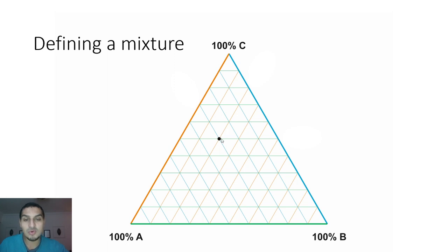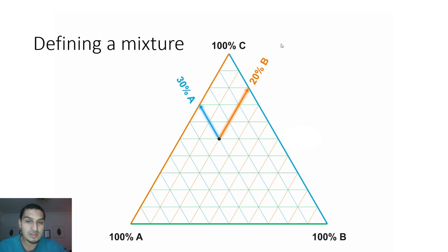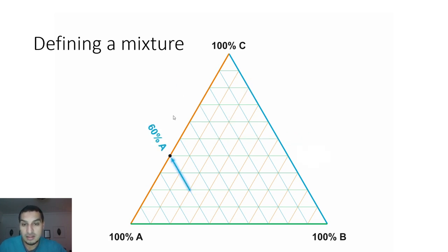For example, if we have a mixture at this point, it passes through three lines. For the B percentage — this is 0%, 10% B, 20% B — so it is 20% B. Then for A — this is 0%, 10%, 30% A — so it is 30% A. The balance is C, which is 50% C. You can verify by counting up: 0%, 10%, 20%, 30%, 40%, 50% C. Similarly, a point on the AC line might give 60% A and 40% C.